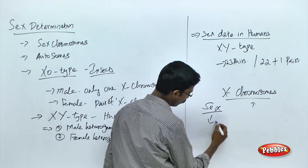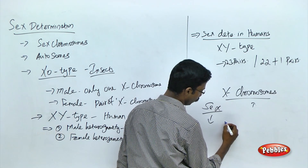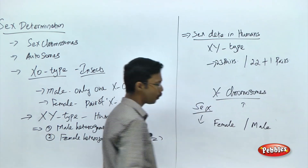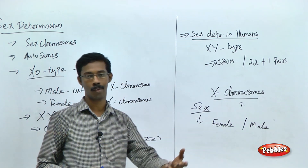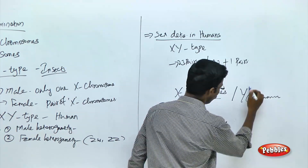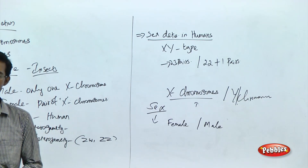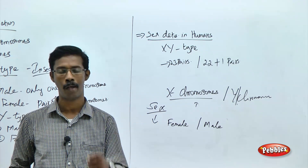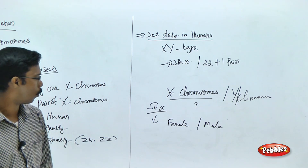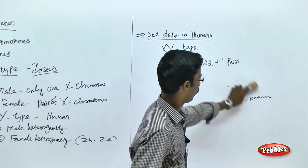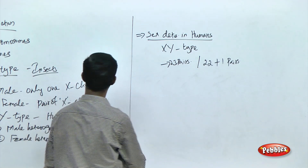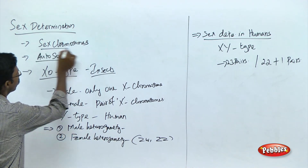The X chromosome plays a role in determining sex — whether a particular individual develops as female or male. Later, another chromosome called Y was discovered. Based on these two chromosomes, X and Y, an individual's sex is determined, which is why we call them sex chromosomes. Whatever the animal or organism, they have a specific set of chromosomes — two types: autosomes and sex chromosomes.